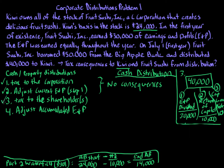We're done with step three. Now we move to step four — the last part of our analysis. We've determined the tax consequences to Kiwi; now we determine the tax consequences to Fruit Sushi, the corporation. Steps one and two had no consequences, but step four is where we determine the accumulated E&P for next year. We needed steps one and two for step three's E&P calculation, and now in step four we're focusing on adjusting accumulated E&P.